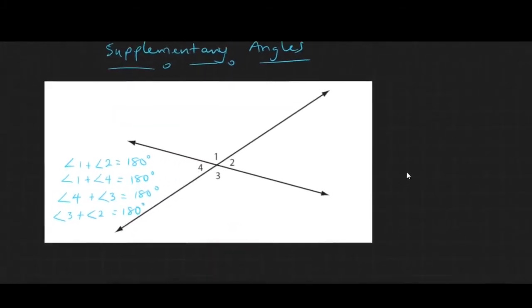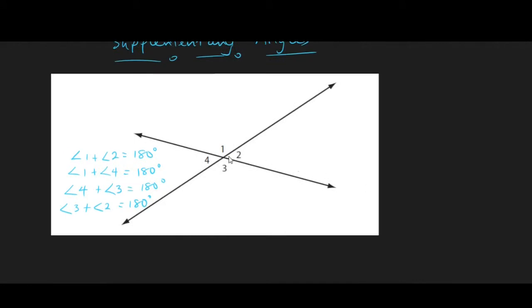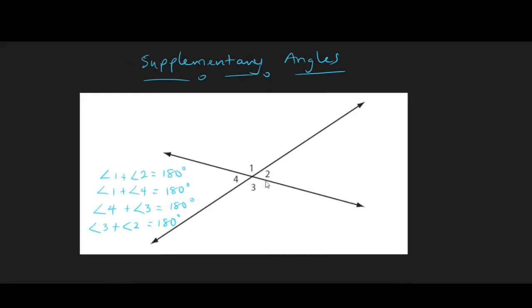With supplementary angles, they add up to 180 degrees. In this example, angles 1 and 2 sum to 180, angles 1 and 4 sum to 180, angles 4 and 3 sum to 180, and angles 3 and 2 sum to 180 degrees.